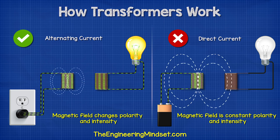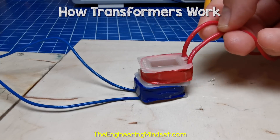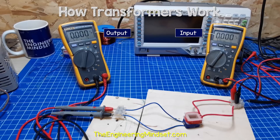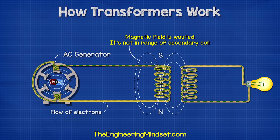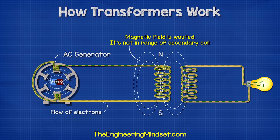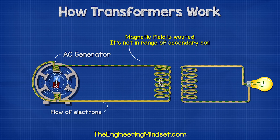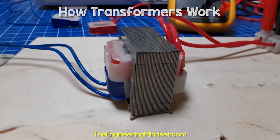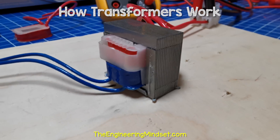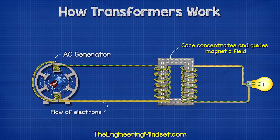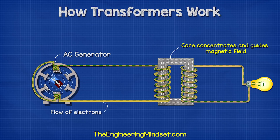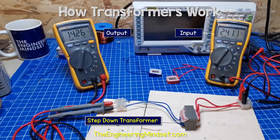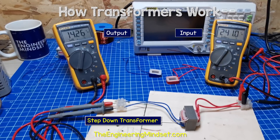We can just use two separate coils of wire as a transformer — it will work, but not very well. The problem is that we're wasting a lot of the magnetic field because it's not in range of the secondary coil. So we place a ferromagnetic iron core between the coils, which concentrates the magnetic field and guides it to the secondary coil so that the transformer is more efficient.